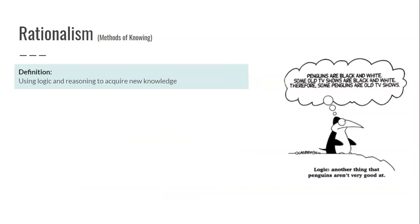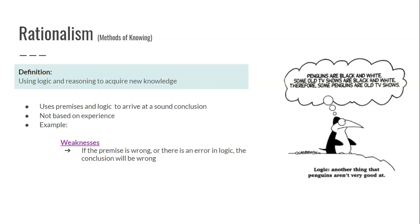The next method is rationalism — using logic and reasoning to acquire new knowledge. It uses a premise and logic to arrive at a conclusion, and is not based on experience whatsoever. The best illustration is the example: penguins are black and white, and some old TV shows are black and white — therefore, some penguins are old TV shows. Here you take the premise that penguins are black and white and a second premise that old TV shows are black and white, and use logic to connect them and arrive at that conclusion.